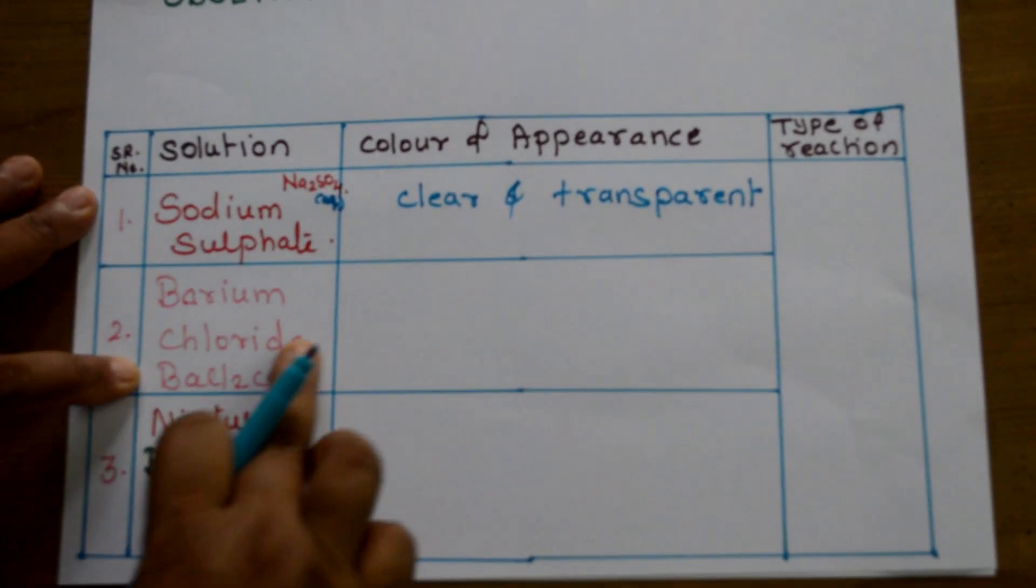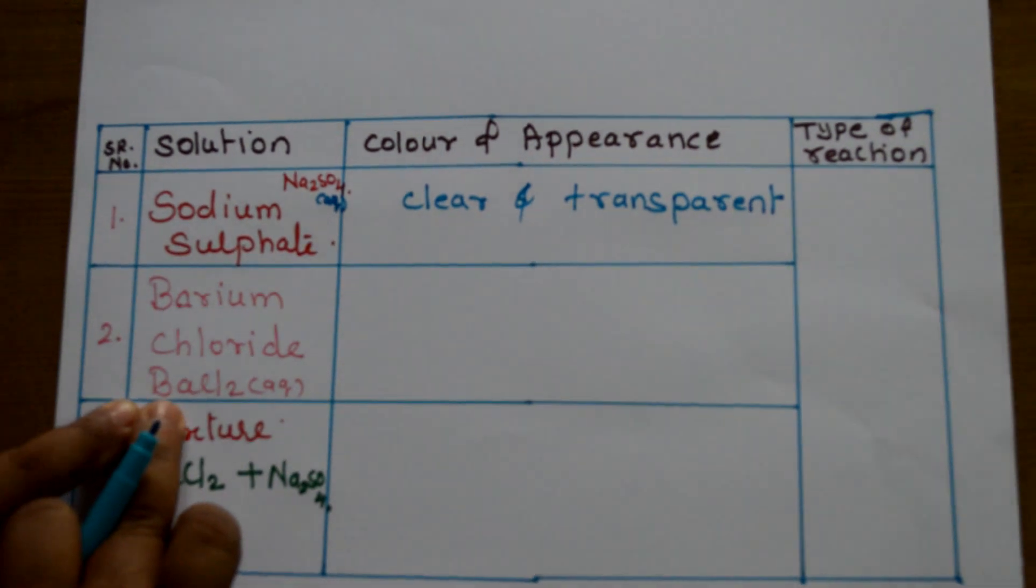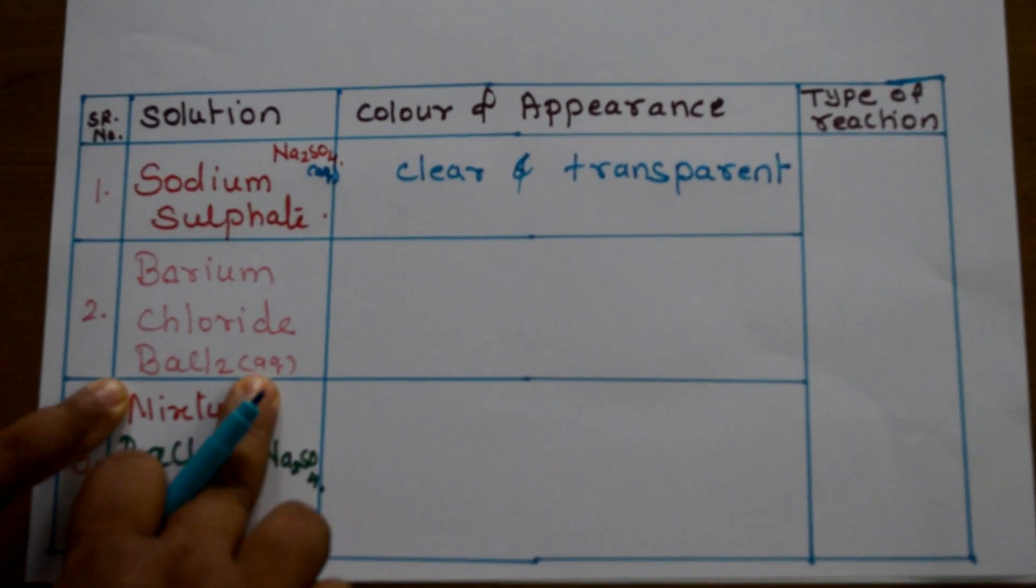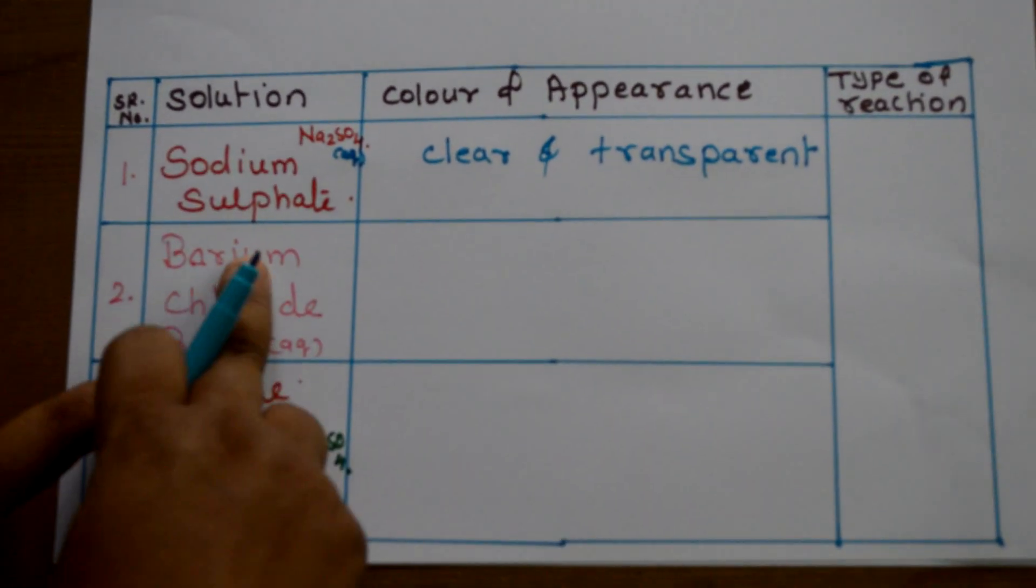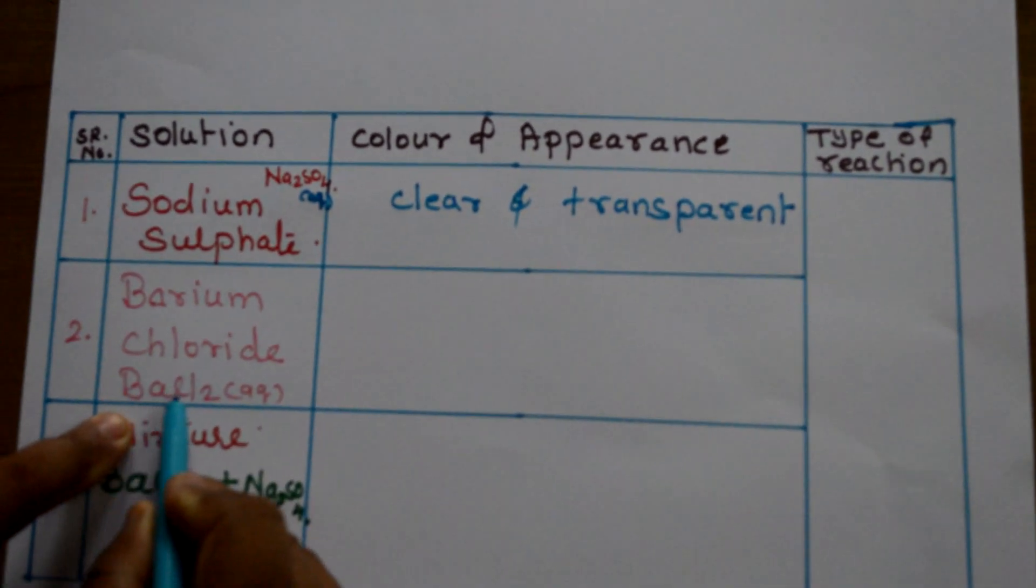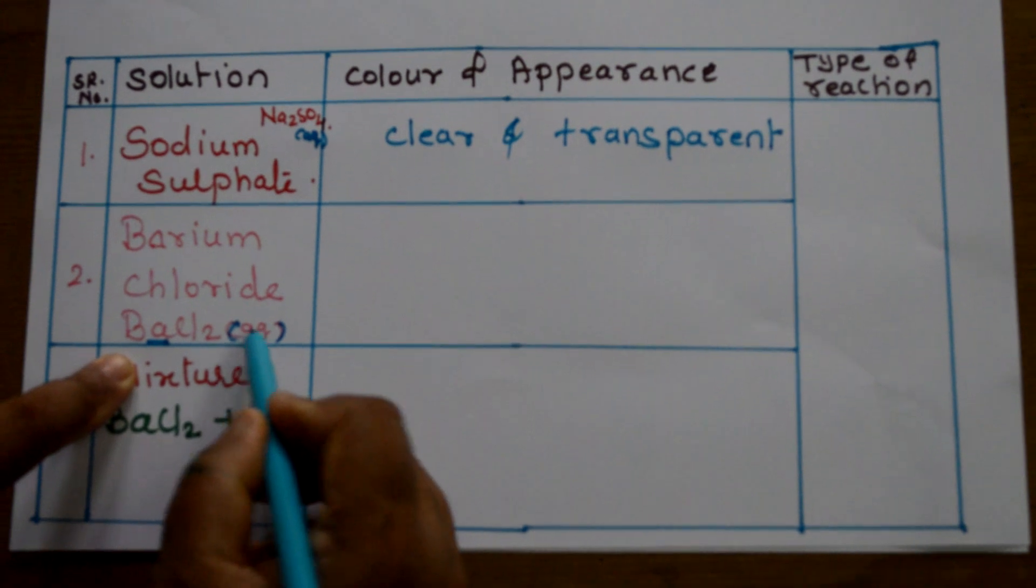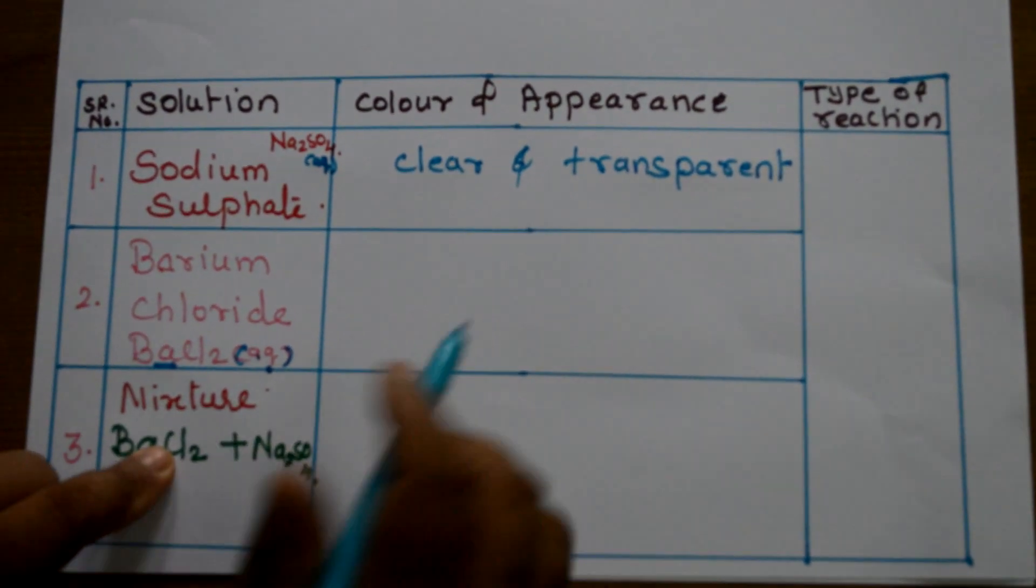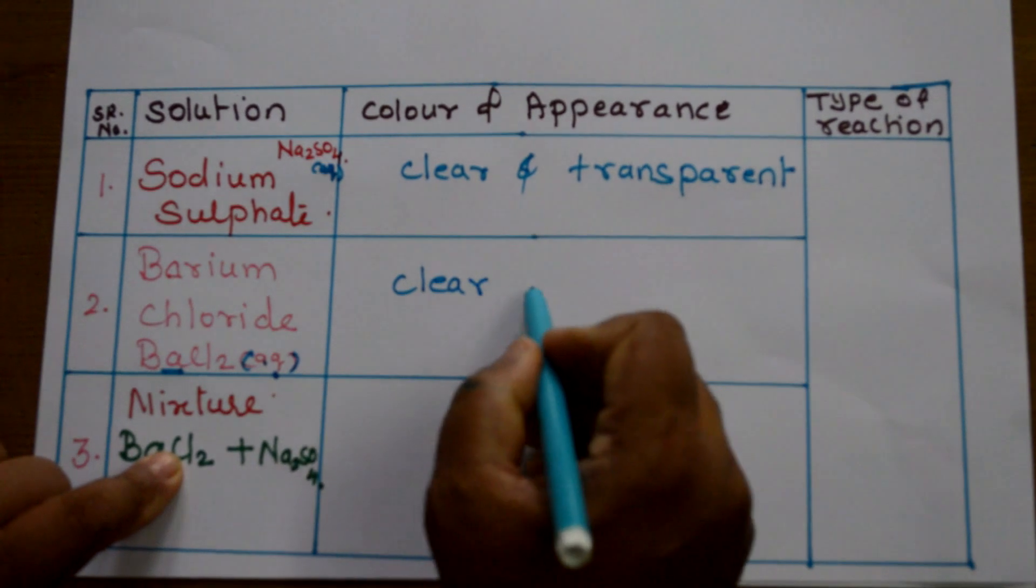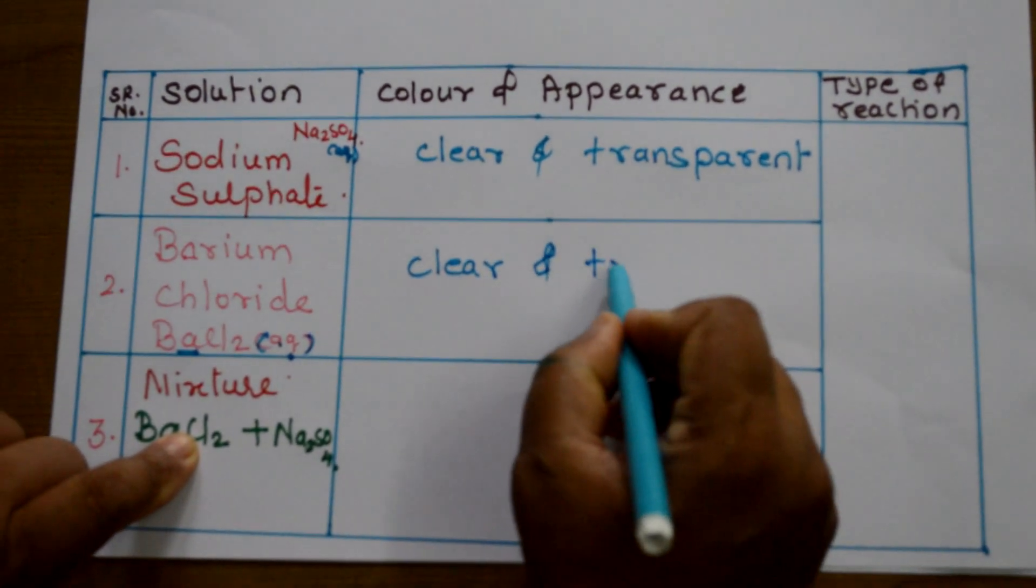Same as barium chloride, molecular formula is BaCl2 aqueous. We got this solution by dissolving the barium chloride salt in water, and therefore it is aqueous. It is too clear and transparent, which you observed.